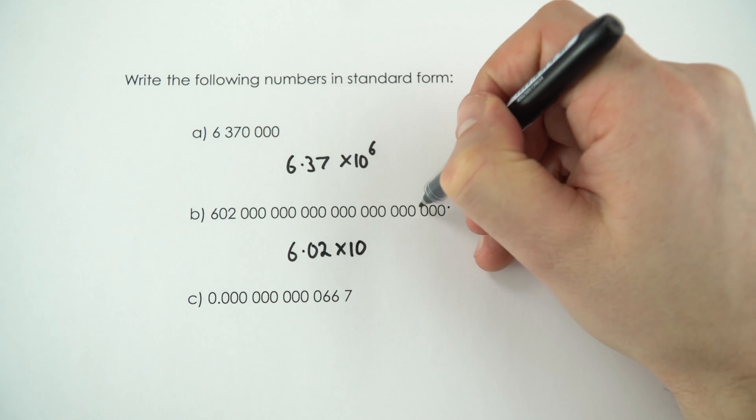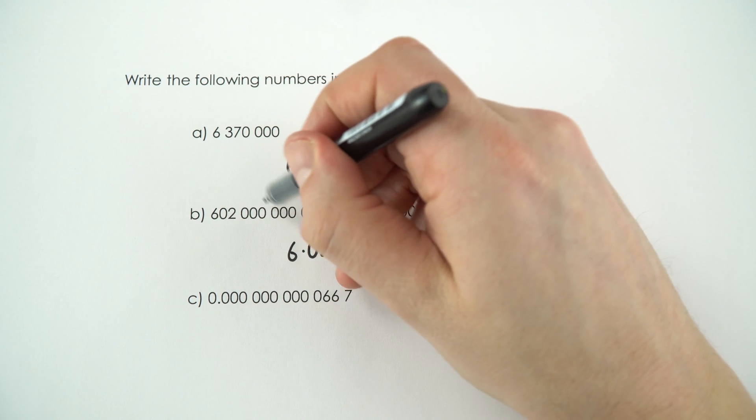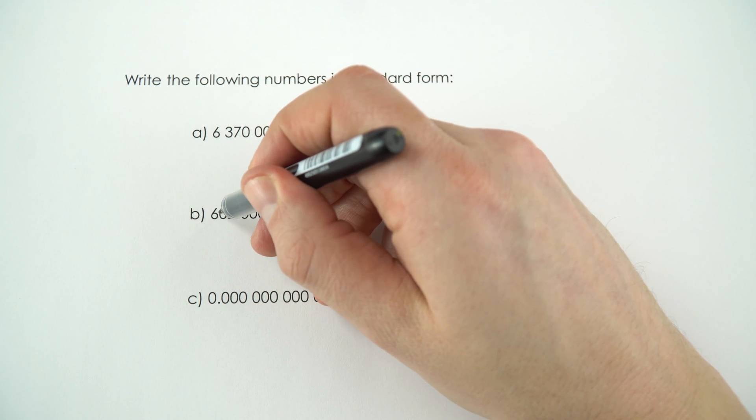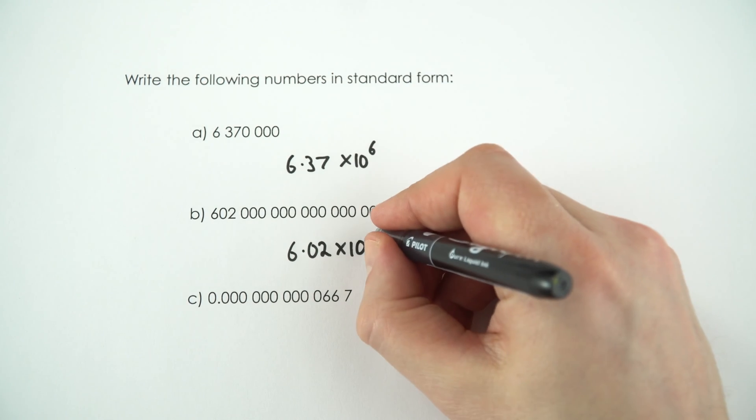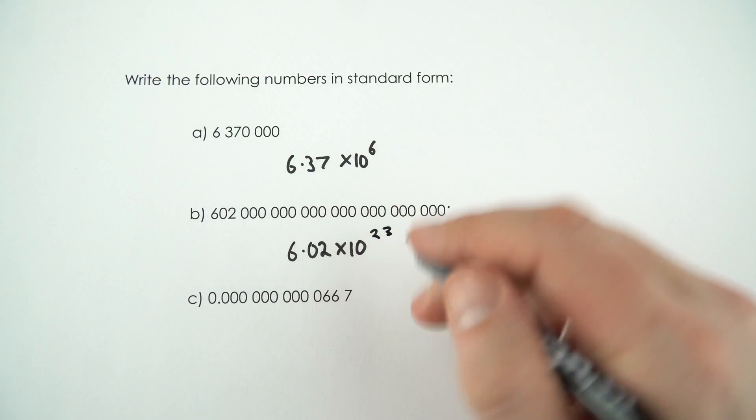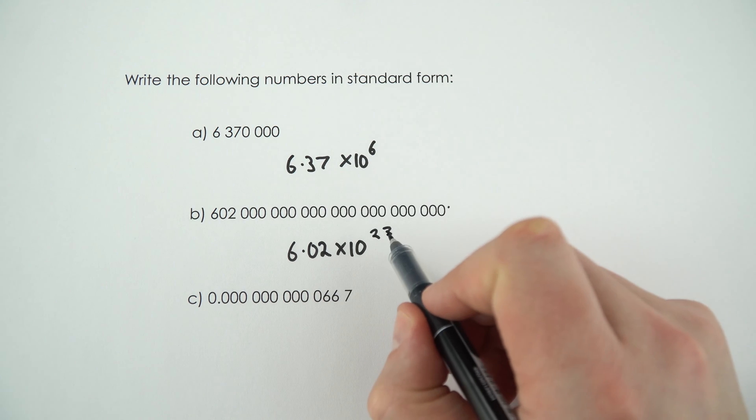Well we've got 3, 6, 9, 12, 15, 18, 21, 22, 23 times. So we've moved the decimal place 23 times, and this is then 6.02 times 10 to the 23.